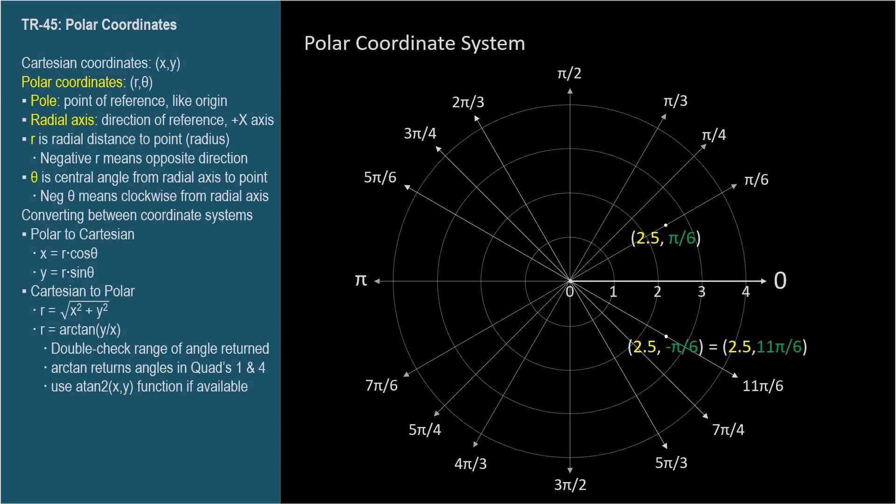Now let's look at the case where the r coordinate is negative, such as (-2.5, π/6). Here's the radial line towards π/6. For negative r, we move in the opposite direction, so this point corresponds to (-2.5, π/6). As you probably expect, the coordinates (2.5, 7π/6) denote the same point.